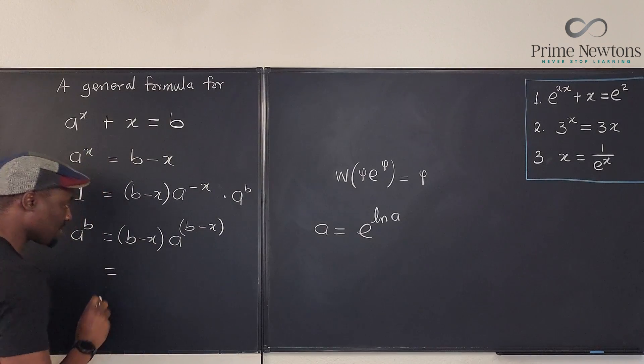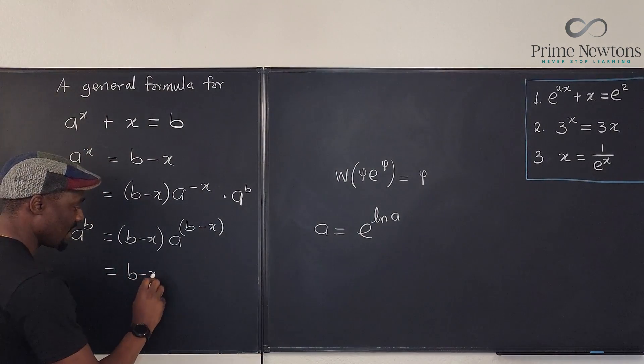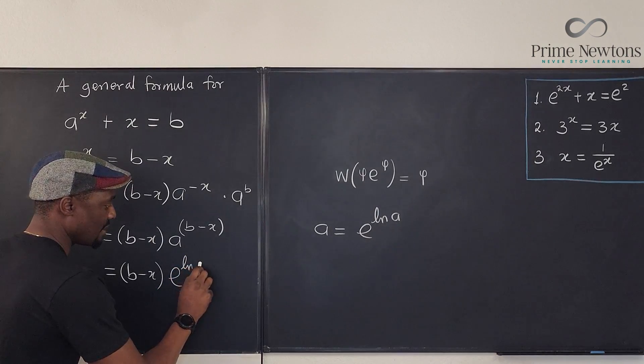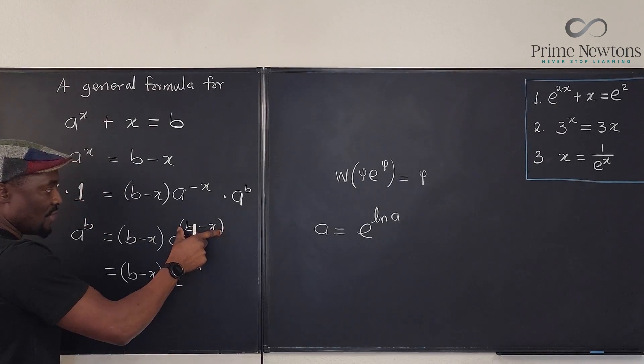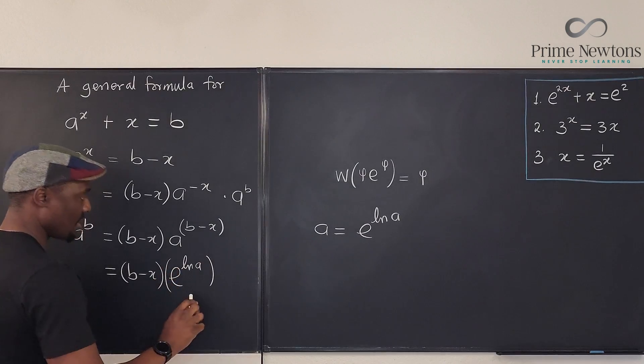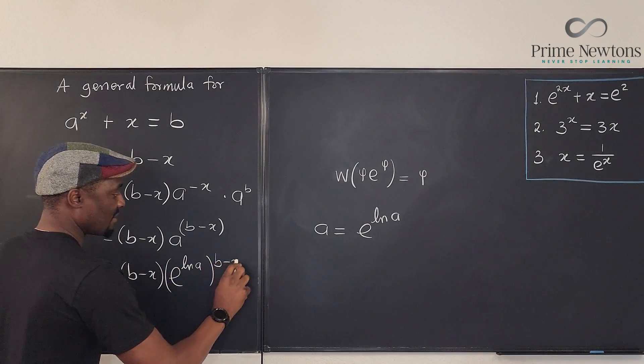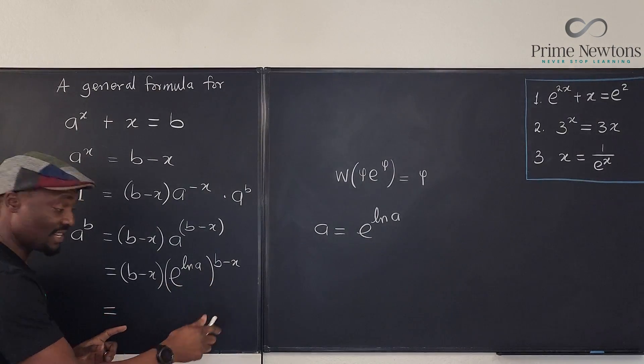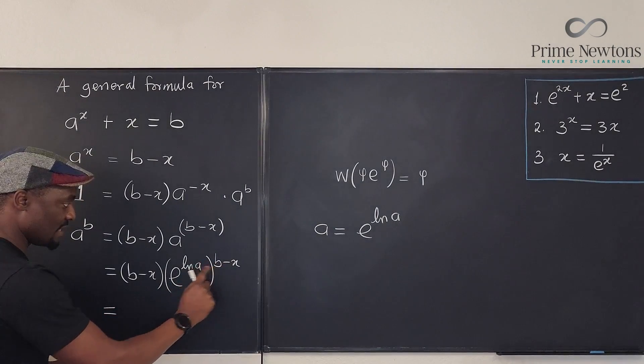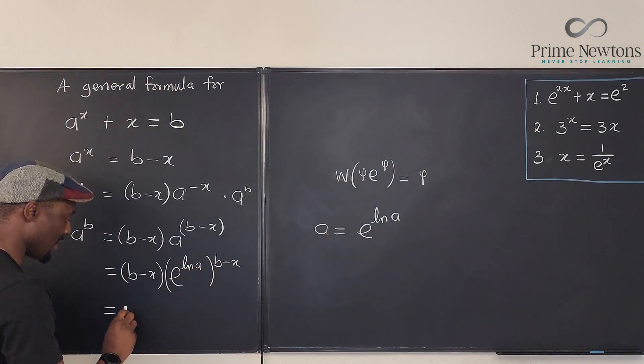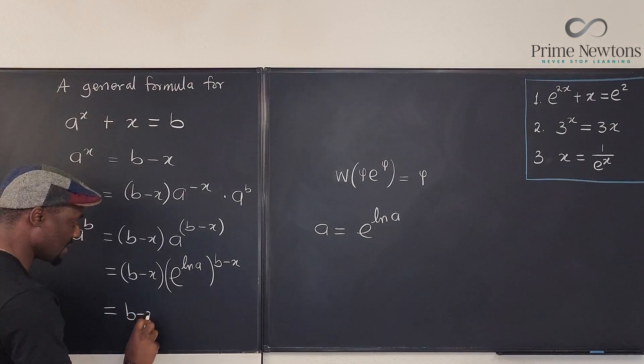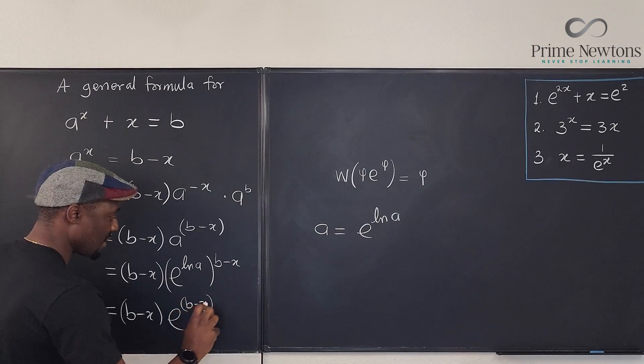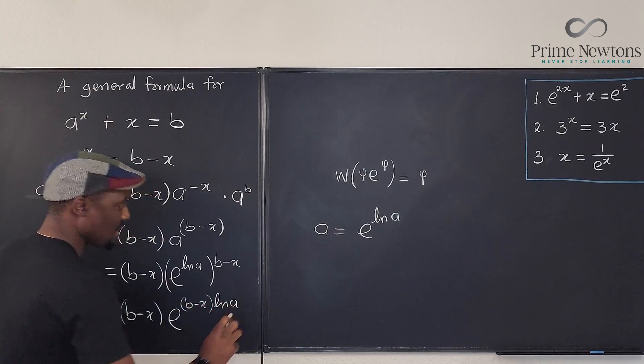So this is going to become b minus x times this becomes e to the ln of a raised to power b minus x. And clearly this is the same thing as, I've not changed anything. We can multiply these two together and that becomes b minus x times e to the b minus x ln of a.